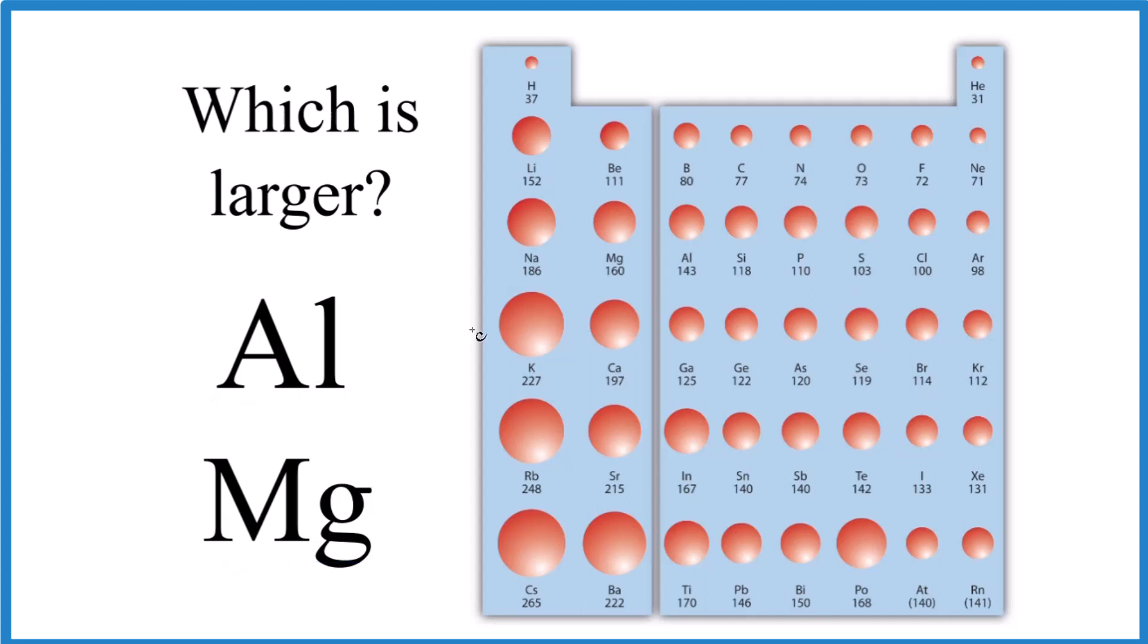So the way to do this, we'll find these both on the periodic table here. This is a condensed version. We've taken out the transition metals, but they follow the same trend. We find aluminum right here, and then we want to find magnesium right next to it on the periodic table.